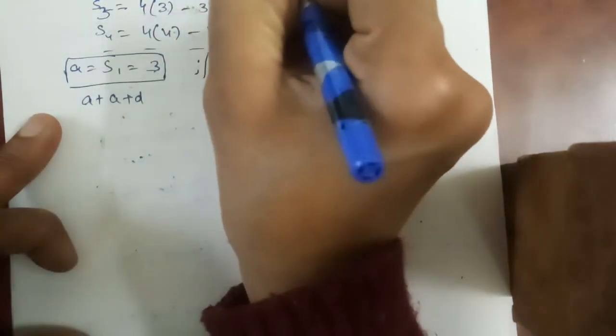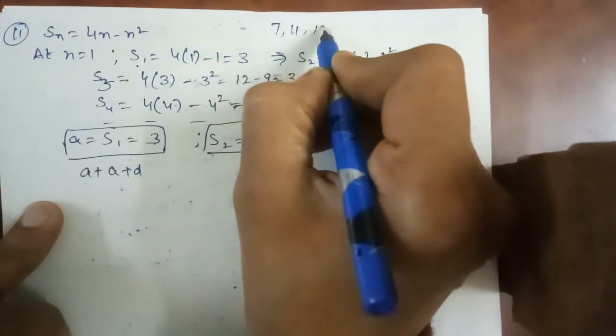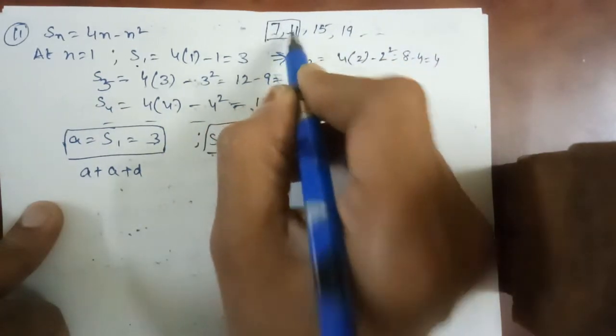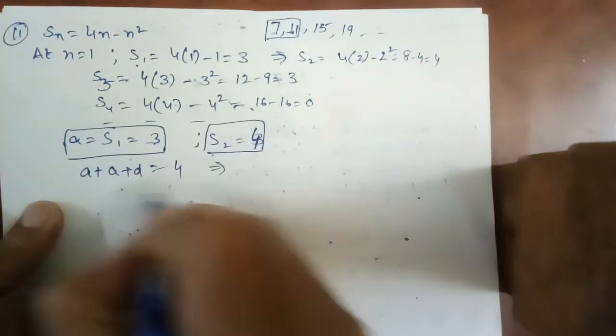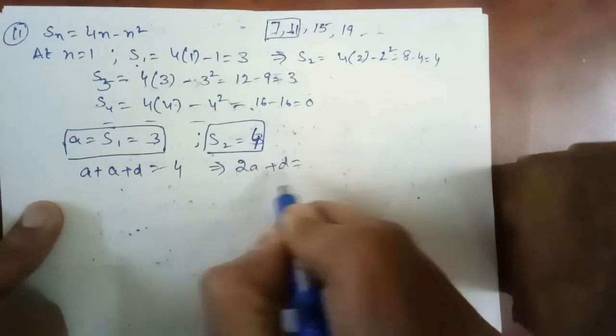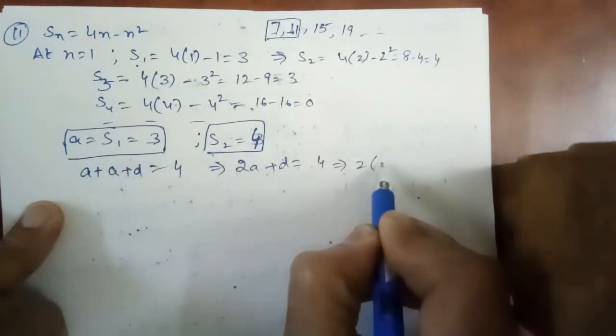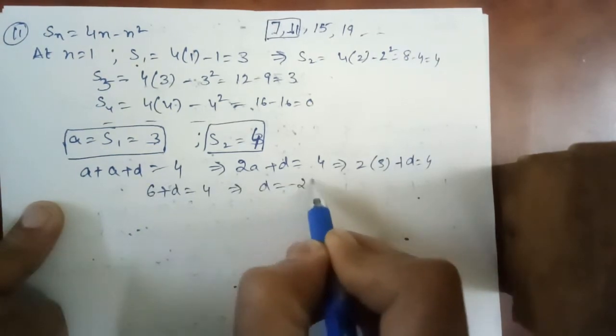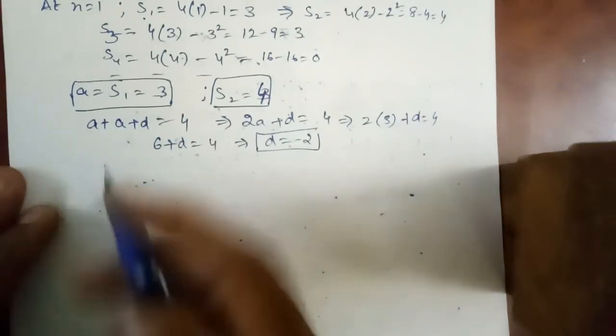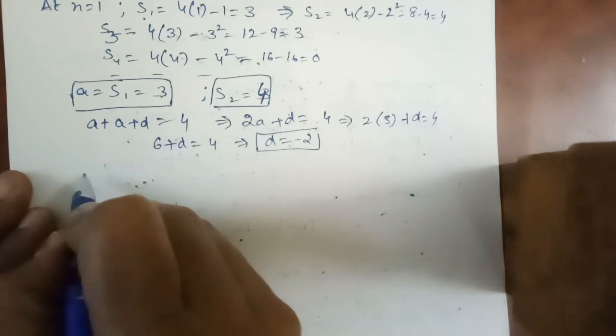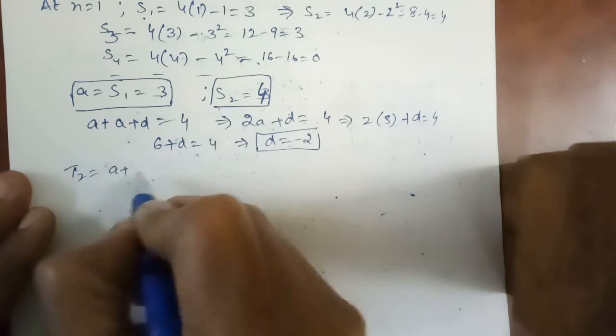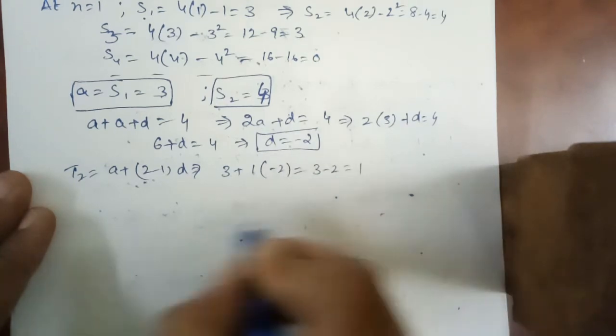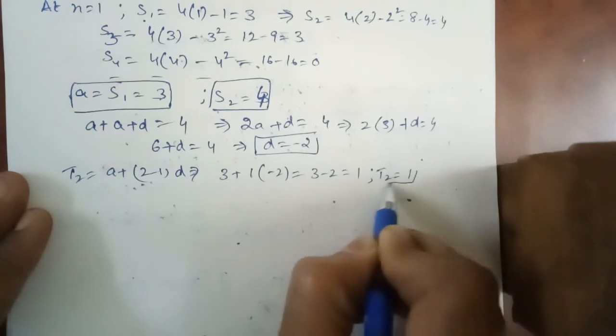S2 is equal to A plus A plus D. So sum of two terms is 4. This is the value of 2A plus D. So D will be: 2 into A is 3, plus D is equal to 4. So 6 plus D is equal to 4. D is equal to minus 2. So the second term is 3 plus 1 into minus 2, that is 3 minus 2, which is 1.